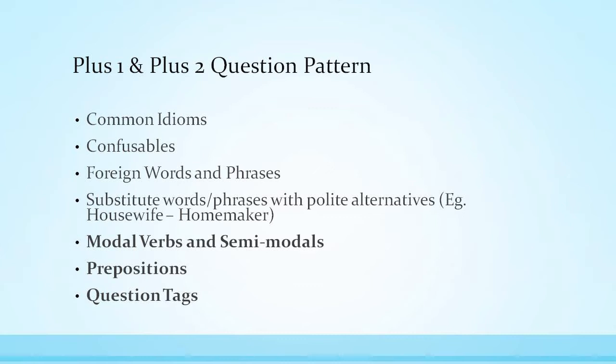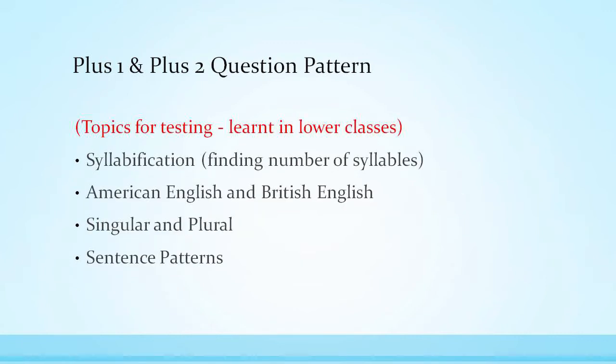Substitute words and phrases with polite alternatives, like housewife to homemaker. Modal verbs and semi-modal verbs, prepositions, and question tags. Topics for testing learned in lower classes include syllabification, finding number of syllables, American English and British English like tube train versus underground train or cash machine versus ATM, singular and plural, and sentence patterns.